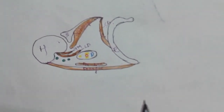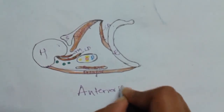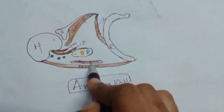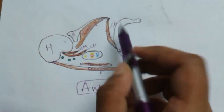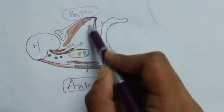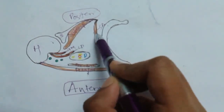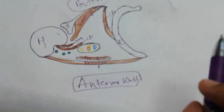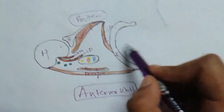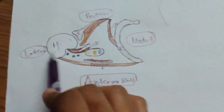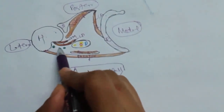Correlating with the walls: the anterior wall is formed by pectoralis major and pectoralis minor. The posterior wall is formed by subscapularis, teres major, latissimus dorsi, and serratus anterior. The medial wall is formed by the ribs — second to sixth — and the intercostal spaces and muscles.